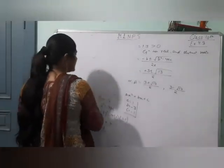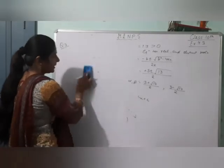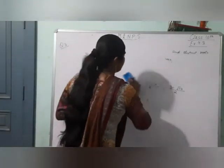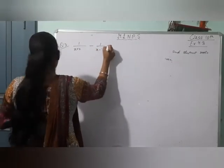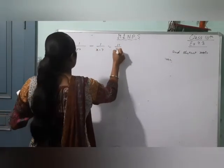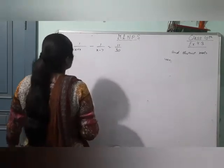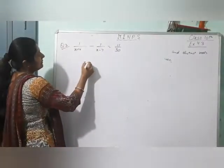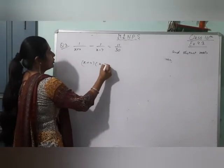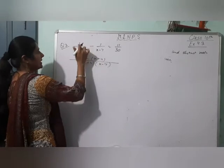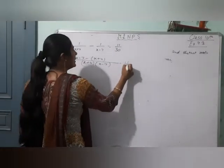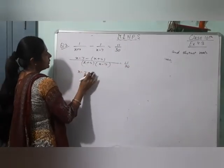Now moving on to the second part. Second part is 1/(x+4) minus 1/(x-7) equals 11/30. This is the equation. Taking the LCM of (x+4) into (x-7). In the numerator, you are getting x minus 7 and x plus 4, equals 11 by 30.